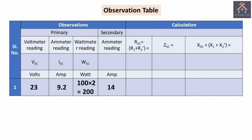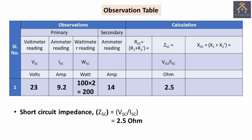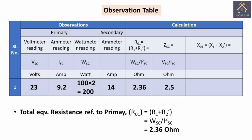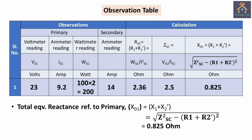Now using this data, we have to calculate the total resistance referred to primary (R01), the total short circuit impedance (Z01 or ZSC), and the total reactance referred to primary (X01). By dividing the primary voltage VSC by the primary current ISC, we can easily calculate the short circuit impedance, which is 2.5 ohm. To calculate the total equivalent resistance referred to primary, we divide the wattmeter reading by the square of the ammeter reading, giving 2.36 ohm. From the short circuit impedance and total resistance referred to primary, we can calculate X01 — the total equivalent reactance referred to primary — which is 0.825 ohm.